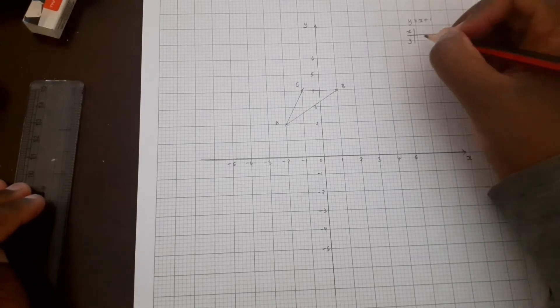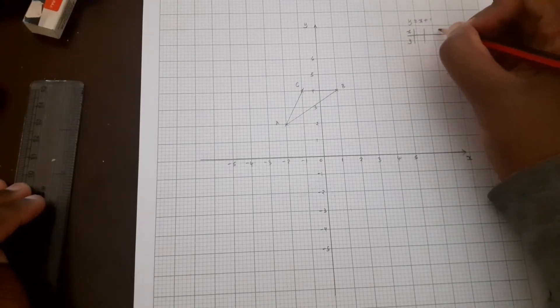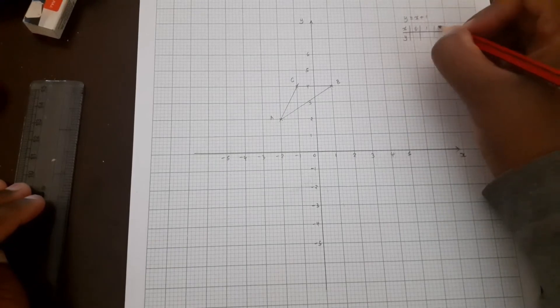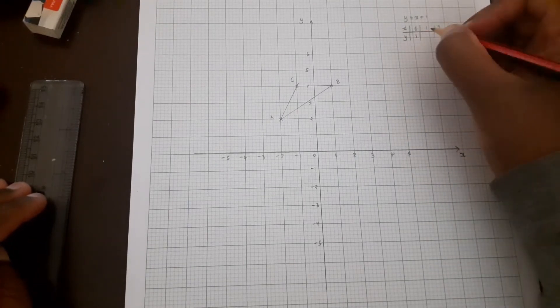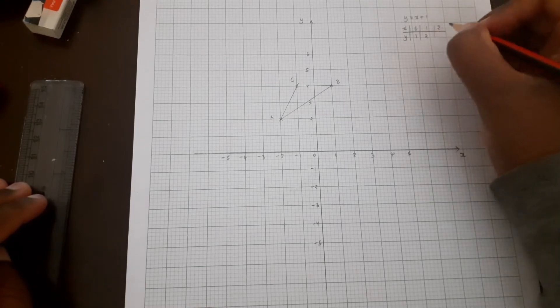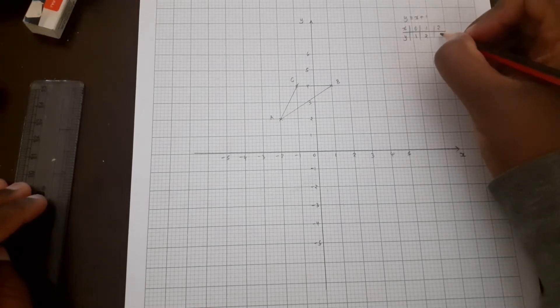We have x and y. We can use 0, 1, and 2. When x is 0, y is 1. When x is 1, y is 2, and when x is 2, y is 3.